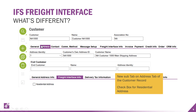On the customer address tab itself, there's a new sub tab with a checkbox for residential address or not, so you can specify that — and that gets passed over to UPS for their information.